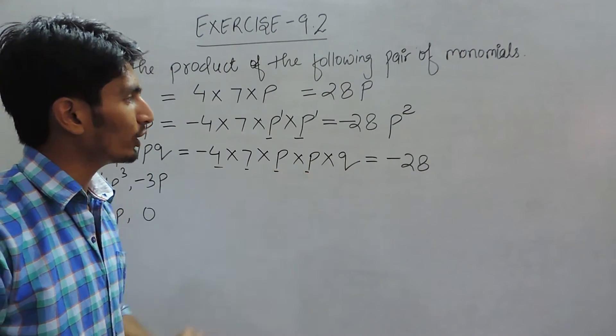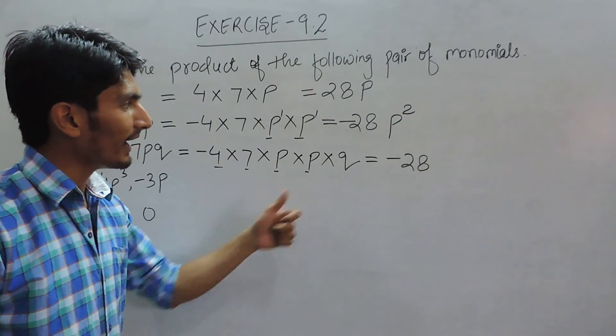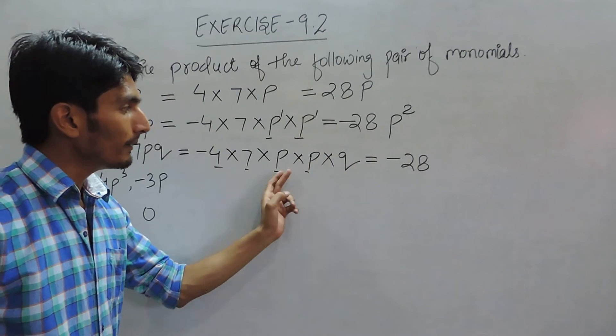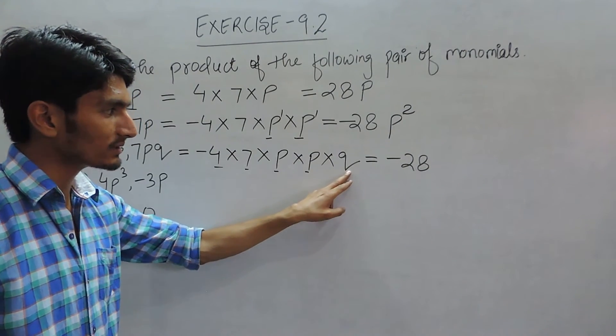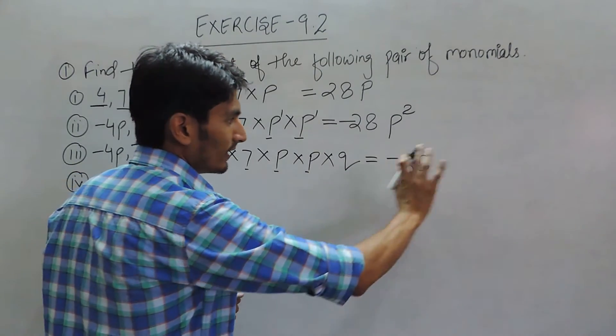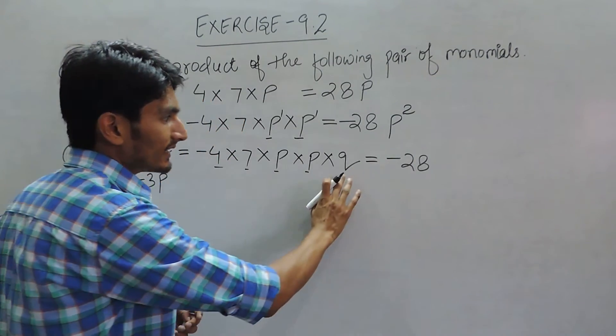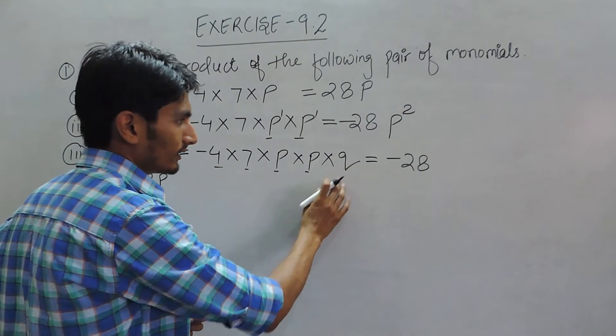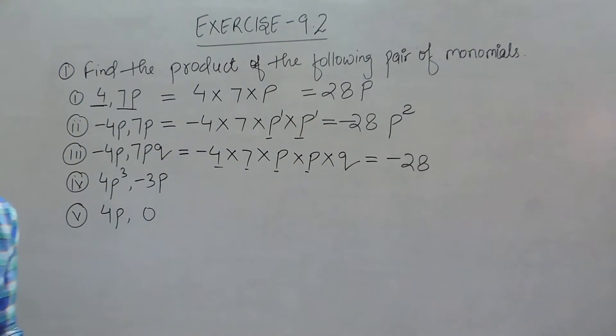You have to multiply, or you can say the power will be added only for like terms, because this power should not be added to P. So Q will be separated.